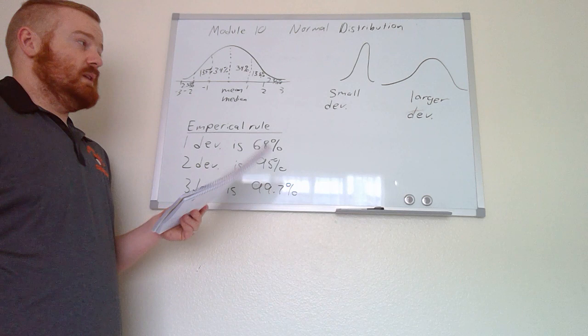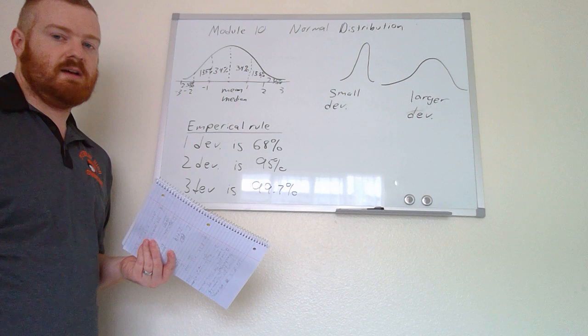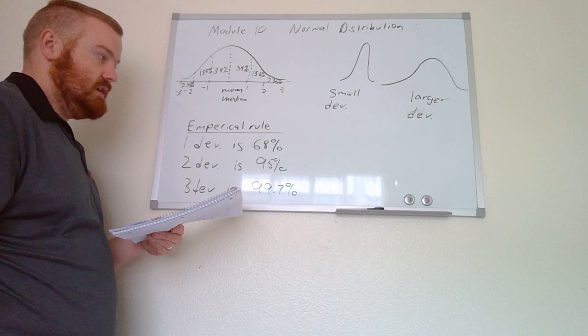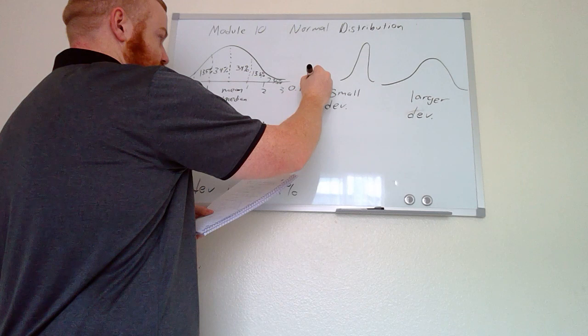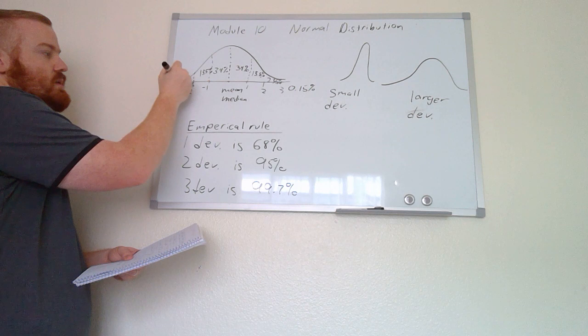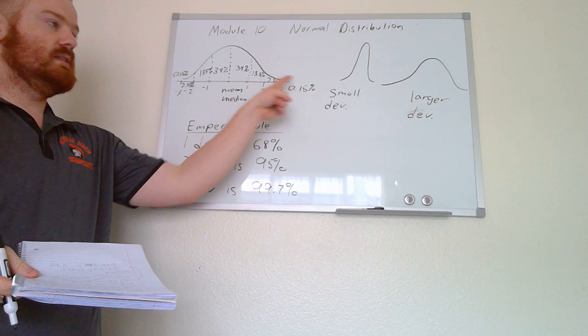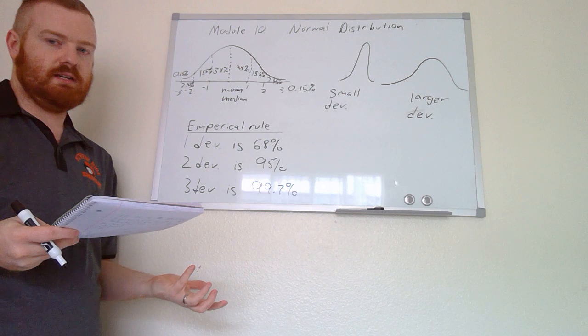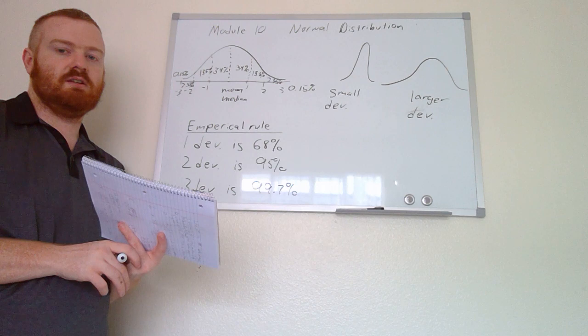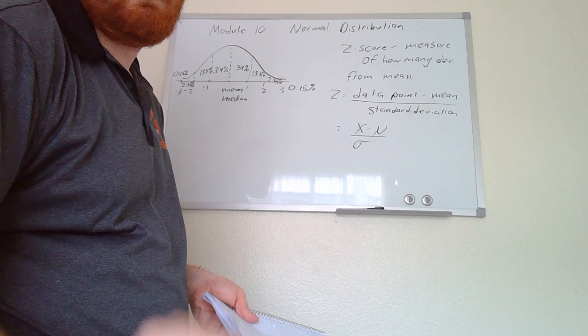Everything beyond three standard deviations — both above and below — each represents 0.15% of the data. Adding all values together gives us 100%. These normal distribution curves are asymptotic, meaning they get closer and closer to the x-axis but never quite touch it. We'll use this type of curve to help us figure out individual data points in upcoming examples.